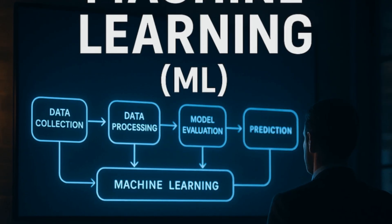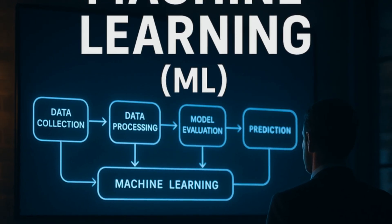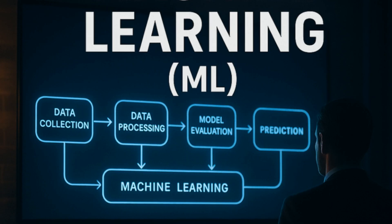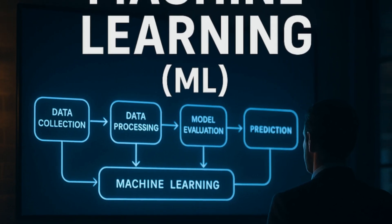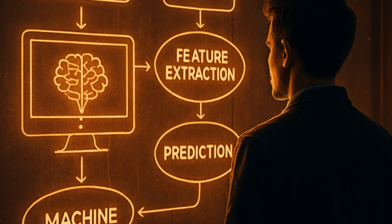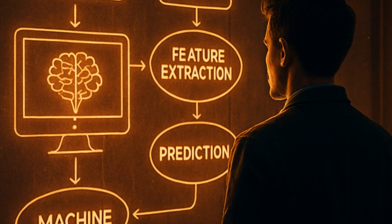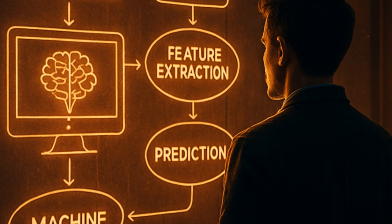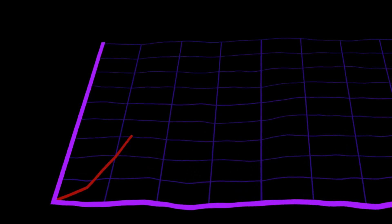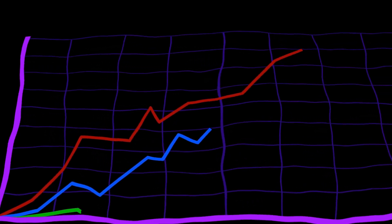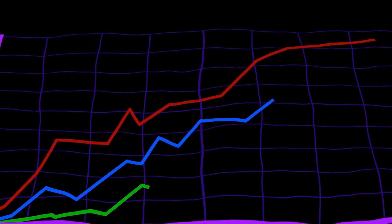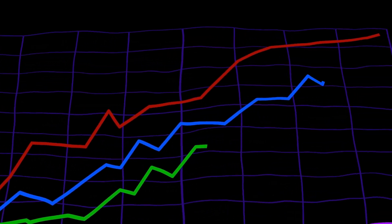Let's move on to term two: machine learning, or ML. If AI is the umbrella, machine learning is one of its most important parts. It's the idea that machines can improve their performance through experience, without being explicitly programmed for every single task.